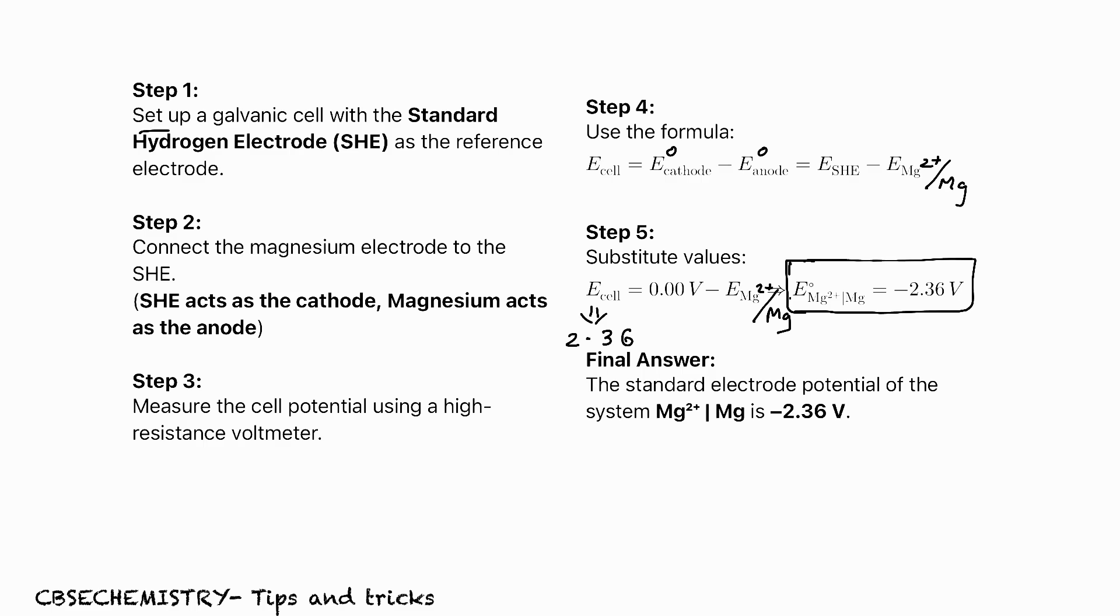We have to start with setting up a galvanic cell with the Standard Hydrogen Electrode (SHE) as the reference electrode. Connect the magnesium electrode to the SHE. SHE must be the cathode and magnesium must be the anode. Measure the cell potential from the voltmeter, and you can see that value is 2.36 volt. Remember the direction of electron flow is from magnesium to SHE.